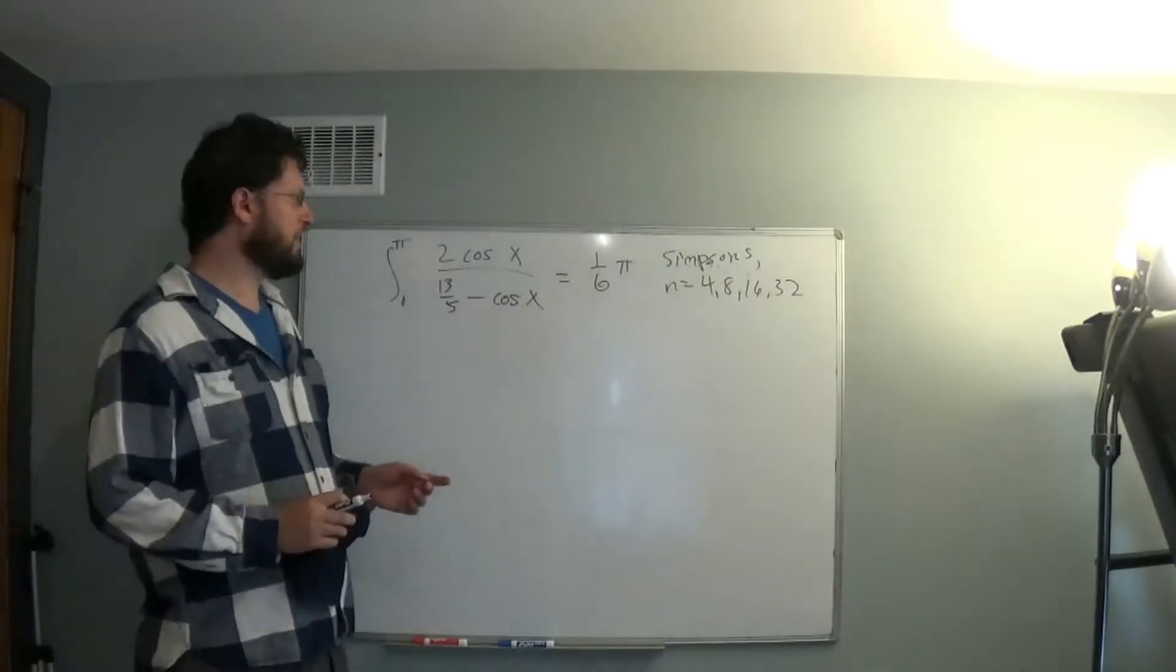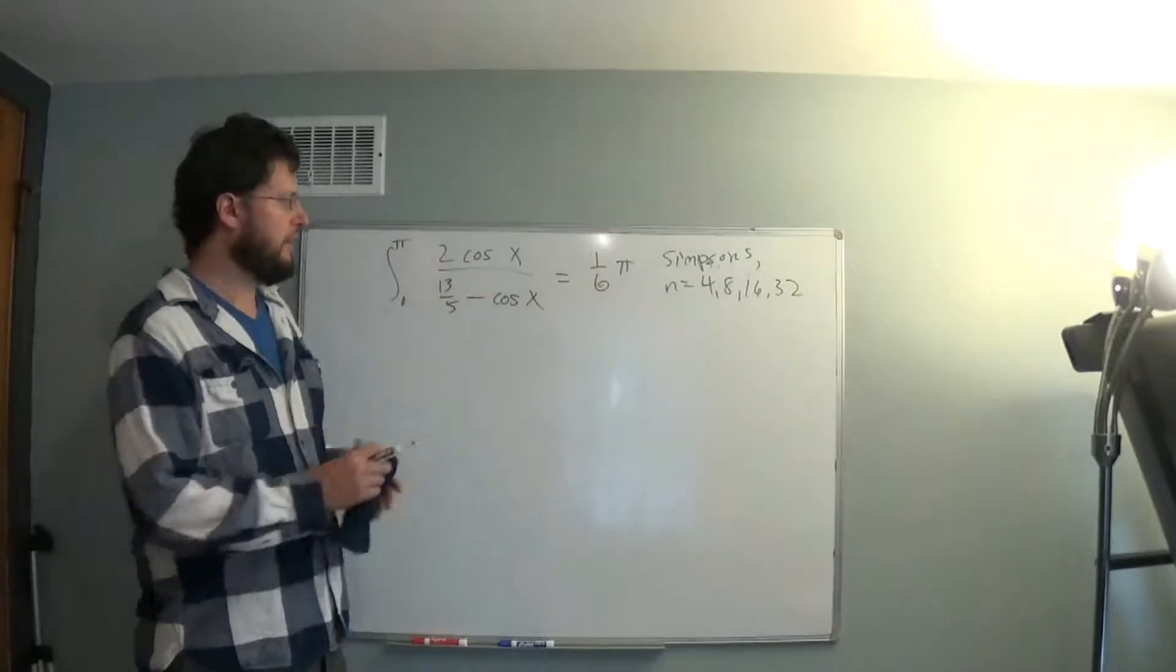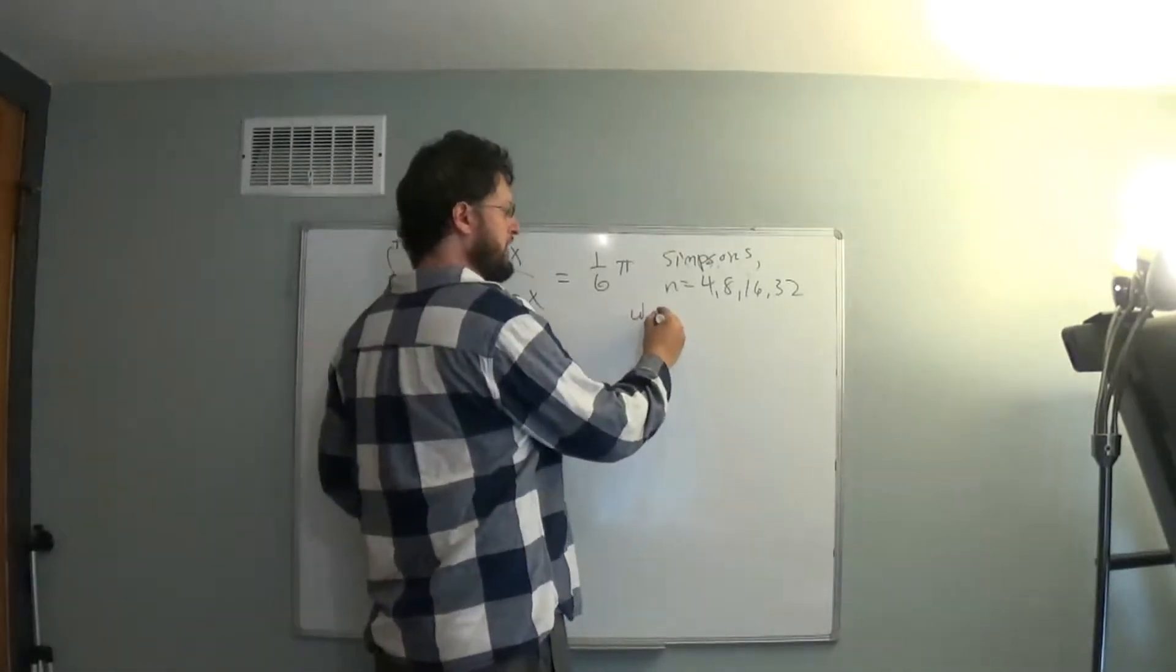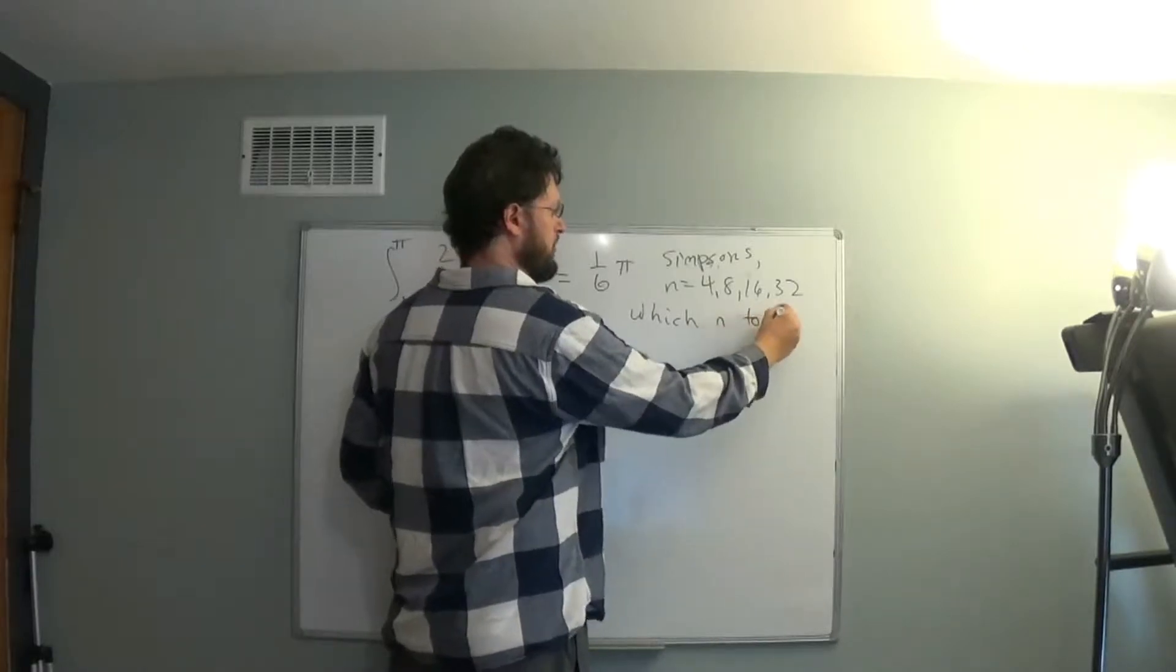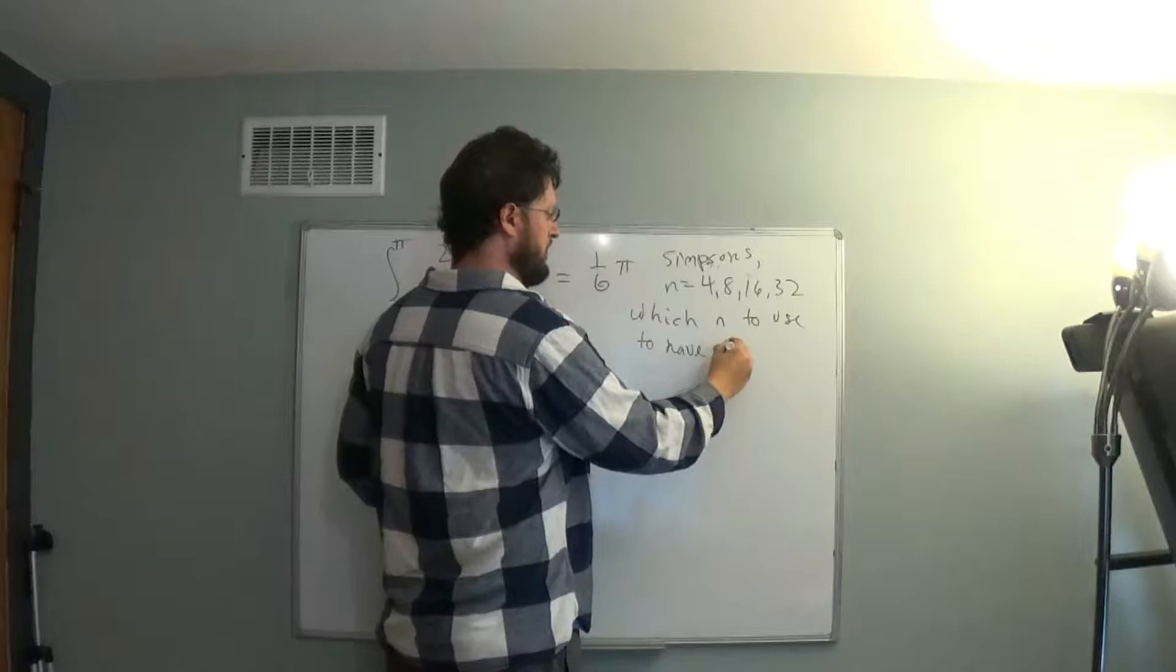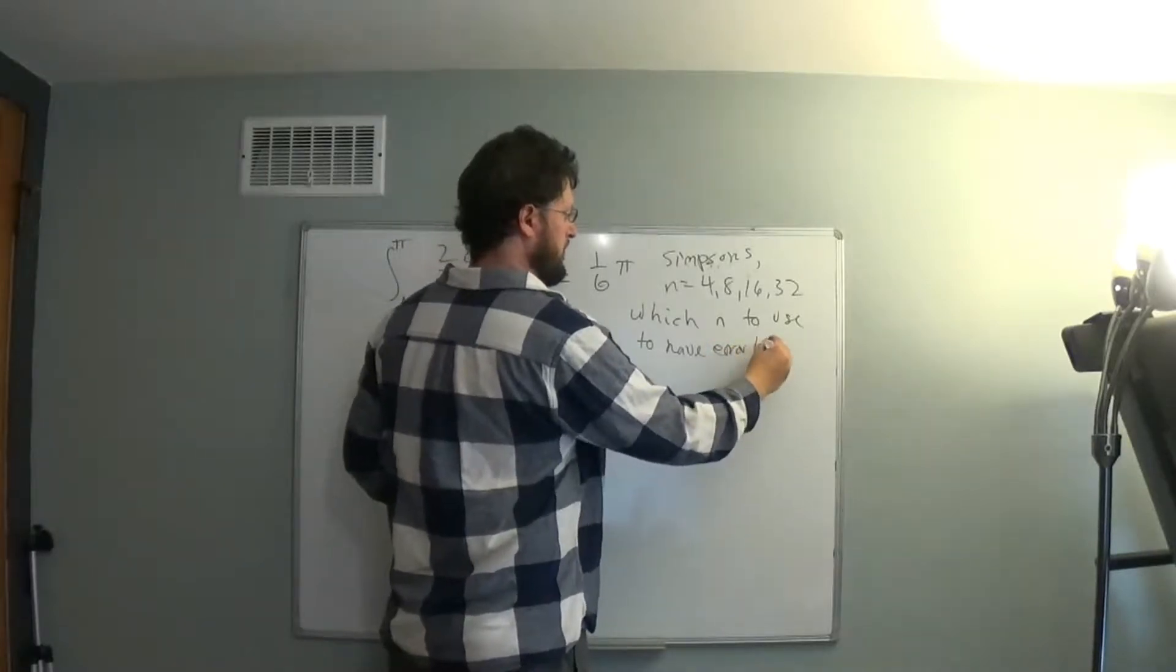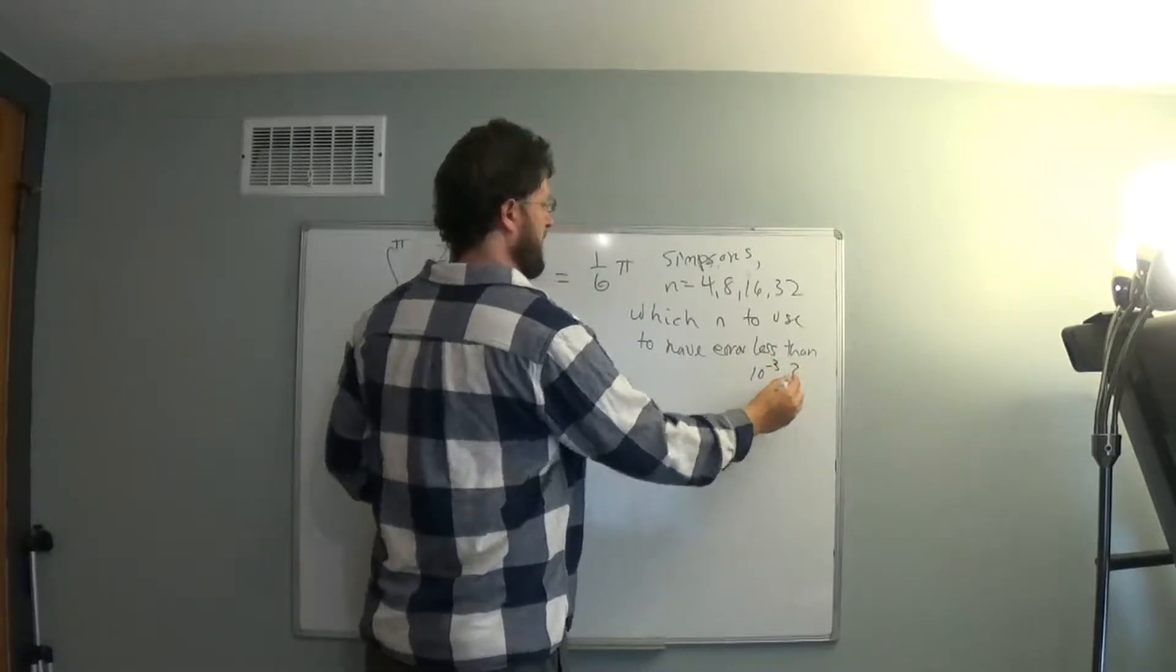Okay, so what we would like to do today is to apply Simpson's rule to this integral, and the goal is to figure out which n to use to have an error less than 10 to the negative 3. That's the question.